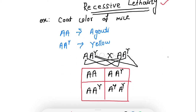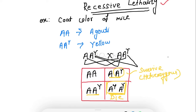In recessive lethality, alleles present in homozygous recessive form cause death. Looking at the Punnett square for mice, the A-Y A-Y genotype has alleles in homozygous recessive form — this mouse cannot survive and will die. The two heterozygous genotypes (A A A-Y) represent heterozygous conditions where the mice will survive due to heterozygosity. This gene is lethal only in its recessive homozygous form.